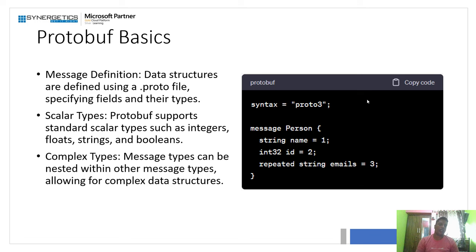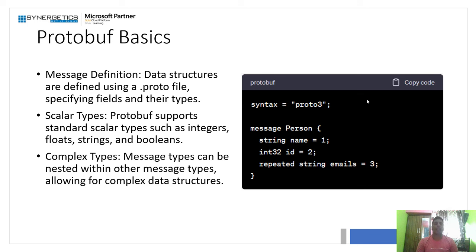In the picture you can see a protobuf file that defines a person message type. The person type contains name, id, and emails members. Name and id are scalar types containing string and integer values. Emails is defined as a repeated field, which means it creates a list of email strings. You can also define the order of those members by assigning field numbers.